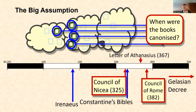Irenaeus of Lyon writes about books that are and aren't in the New Testament, making a clear distinction between scripture and non-scripture. He writes about various apocryphal books, says these are not scripture, and gives reasons. He is very insistent there are just four gospels. So there is certainly an idea of canon at the time of Irenaeus.